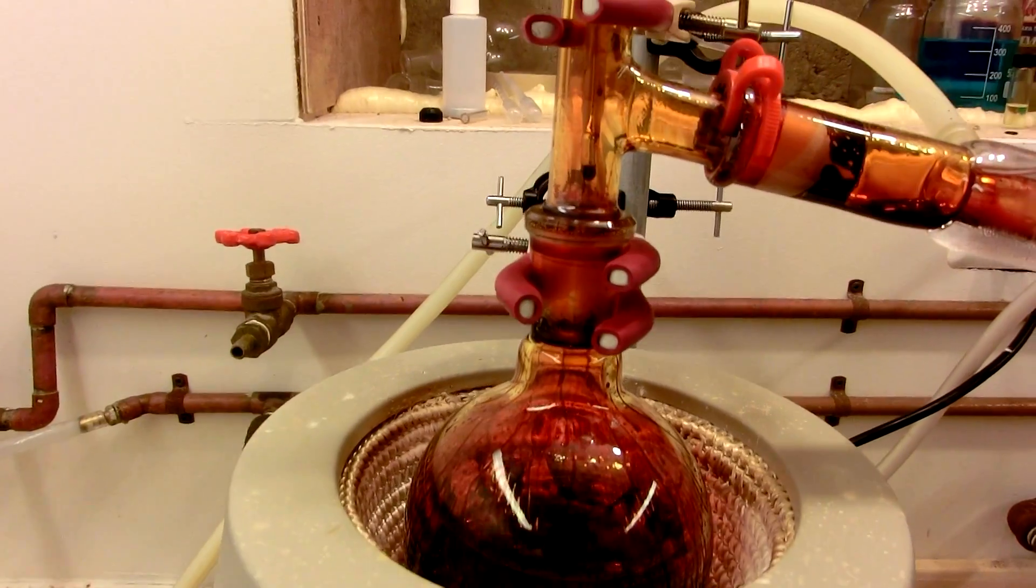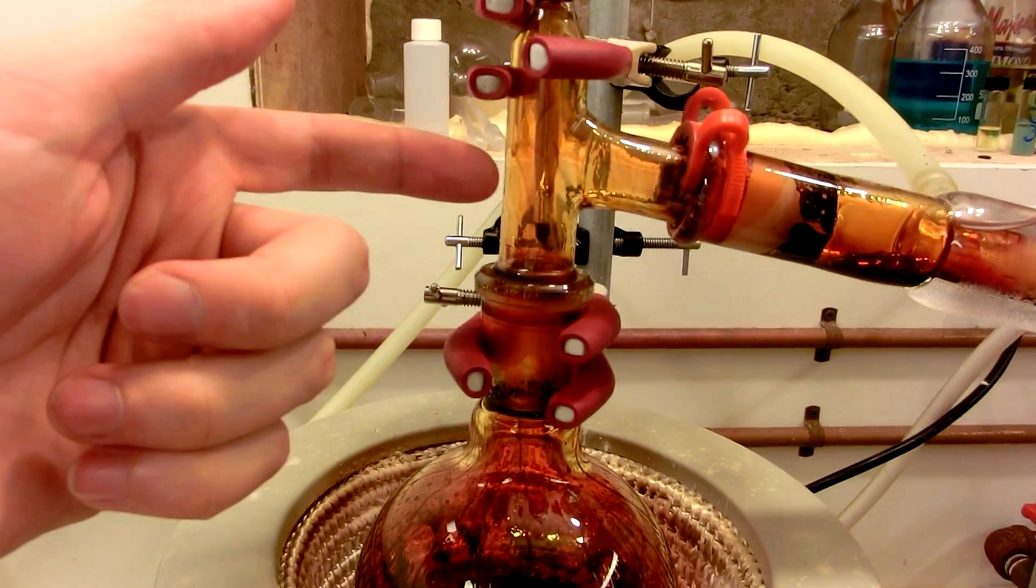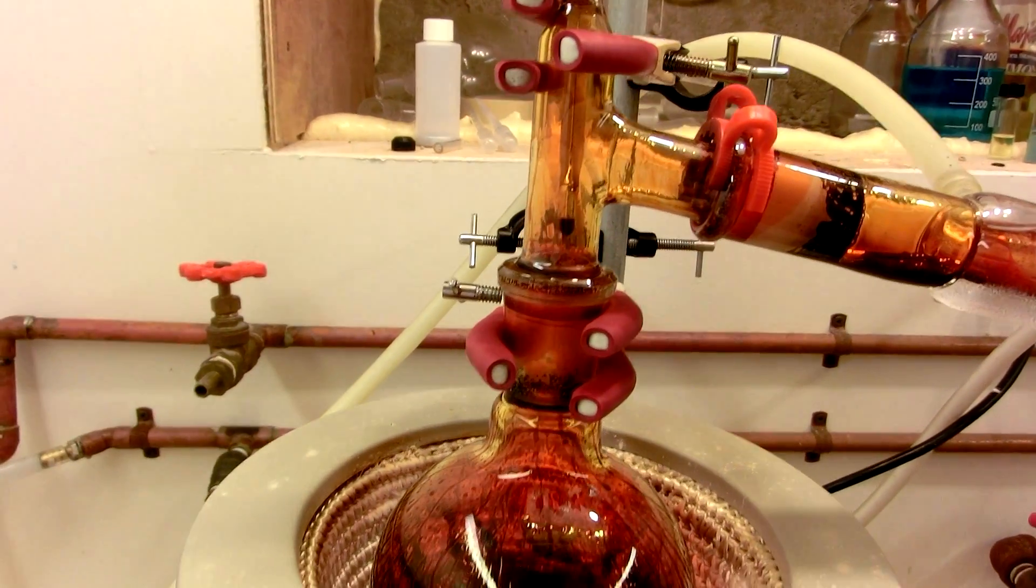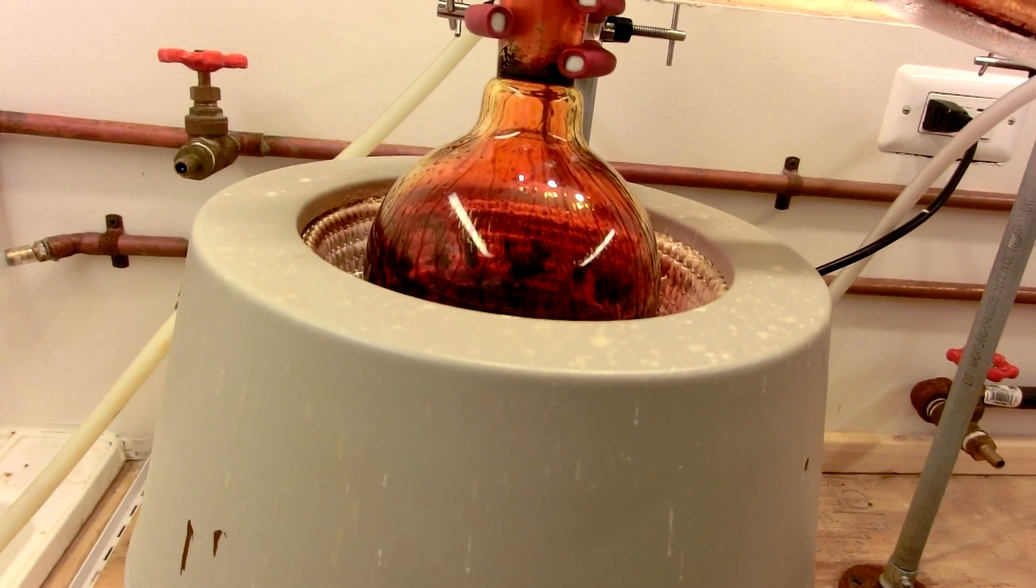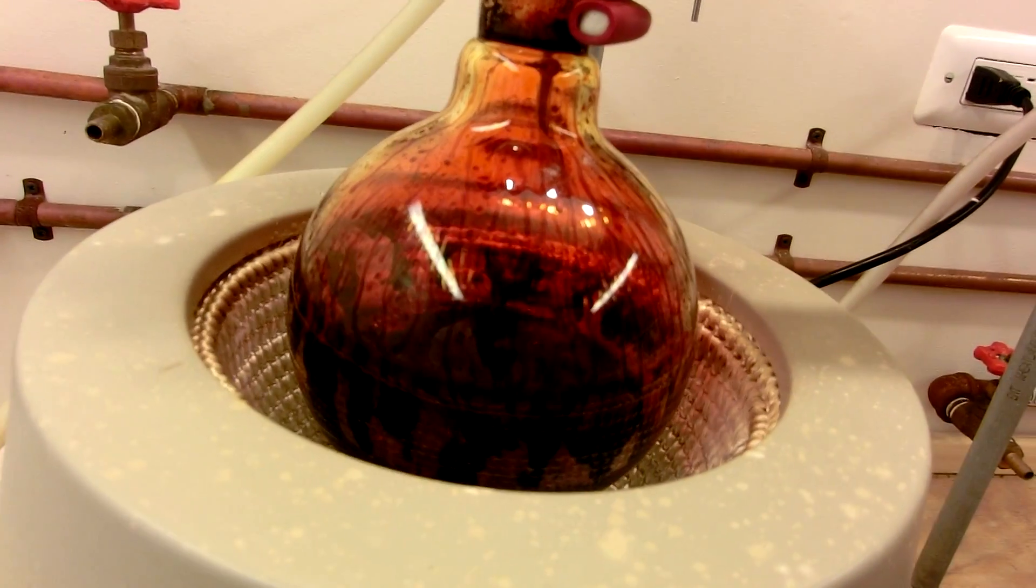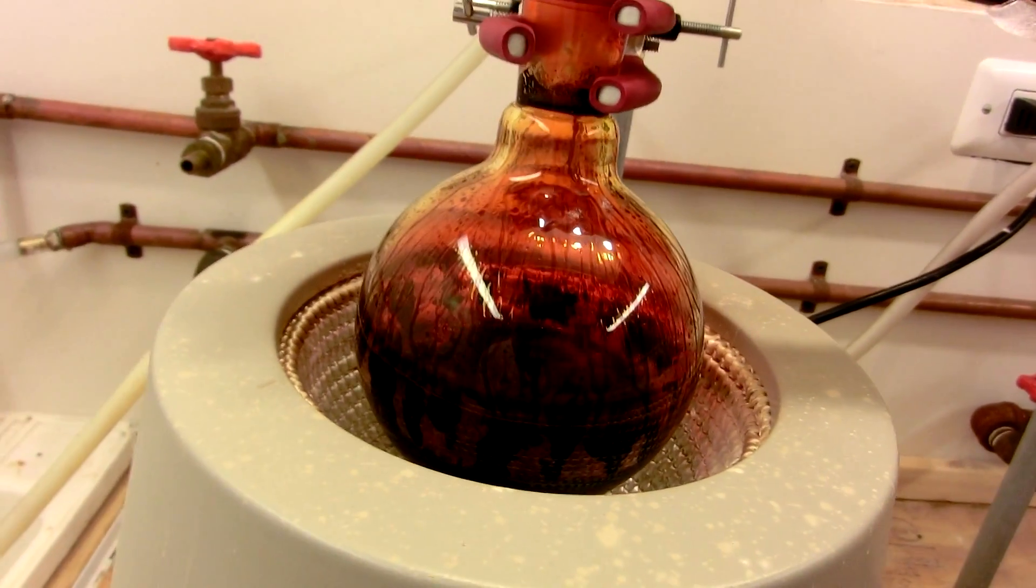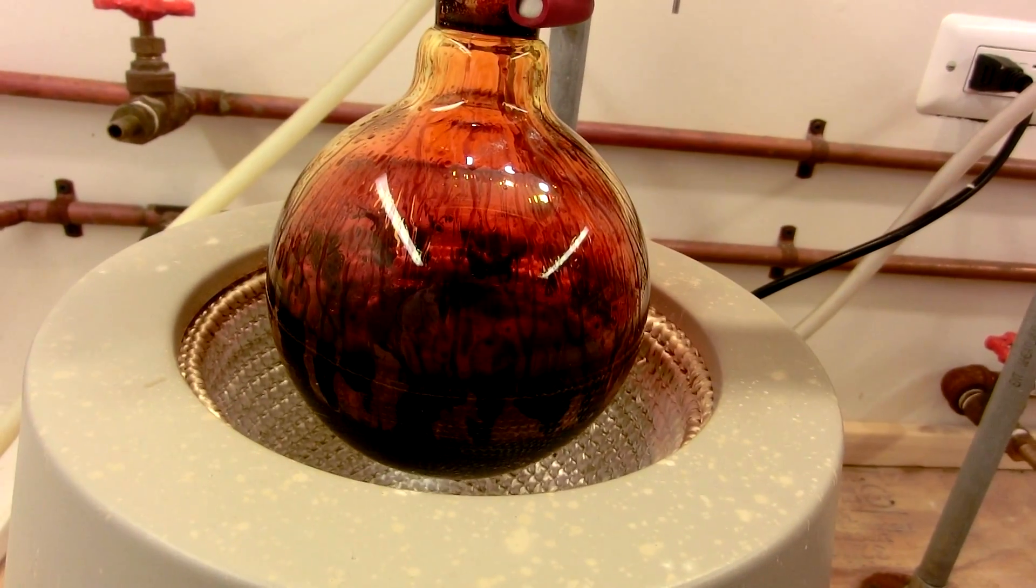The end point of the reaction will be evidenced by a sudden clearing of the glassware. Notice how this has gone from a very blood red to a lighter color. The heating can then be stopped. We'll lower the heating mantle to prevent it from scorching the contents of the flask or driving any water off the sulfuric acid and contaminating our chromal chloride.